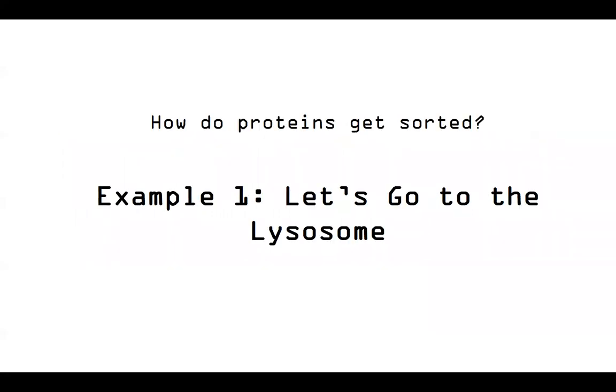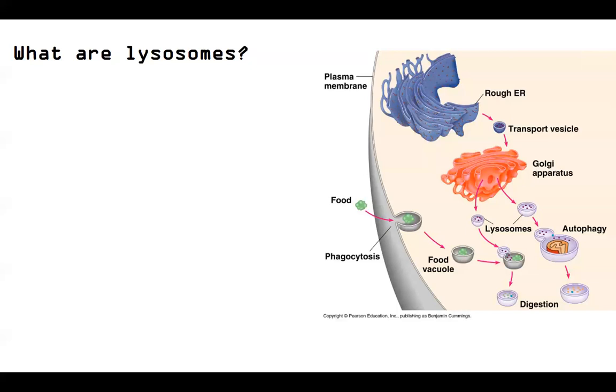How do proteins get sorted? Two new examples. First, let's go to the lysosome. So what are lysosomes? Lysosomes are small single membrane digestive organelles. As you can see, here are some lysosomes.